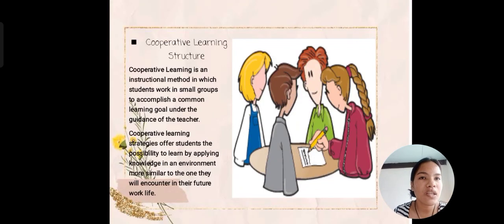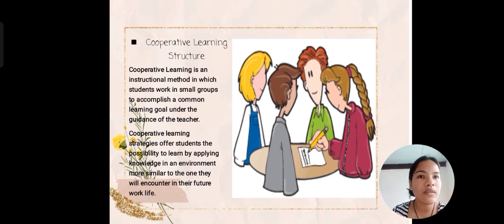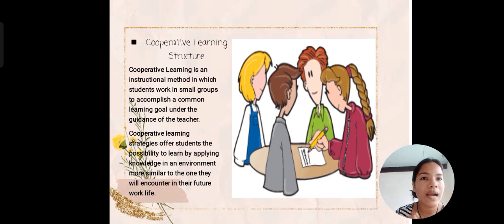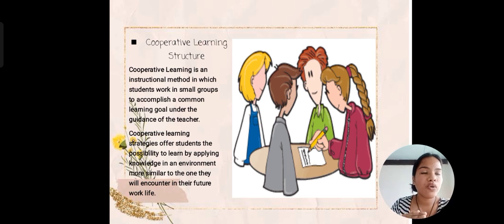The next strategy is cooperative learning structure. When we say cooperative, that means there is cooperation between you as a teacher and your students. Cooperative learning is an instructional method in which students work in small groups to accomplish a common learning goal under the guidance of the teacher. There is a relationship between the teacher and the students.